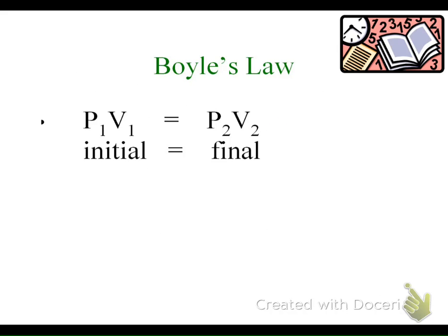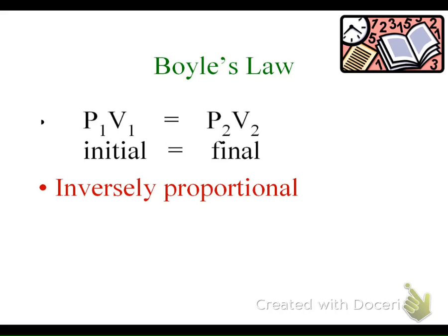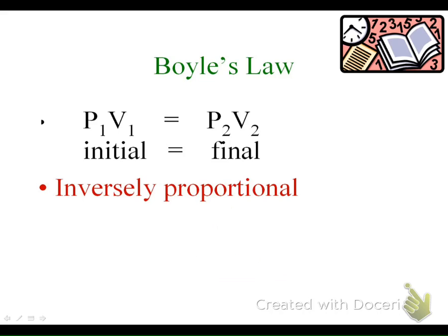Boyle's Law mathematically is P1V1 = P2V2, where the 1s and 2s denote initial and final. This is inversely proportional, and if I were to draw a graph of Boyle's Law with pressure and volume labeled, it would look like an inverse curve — not just a straight line down. Please make sure you remember this graph. We'll actually be doing this in the lab, where you'll graph that in our Boyle's Law lab coming up.